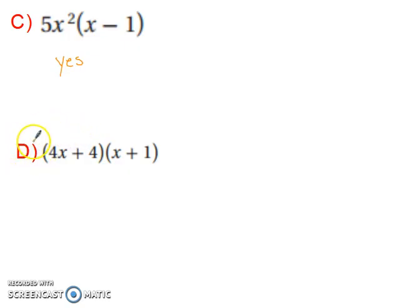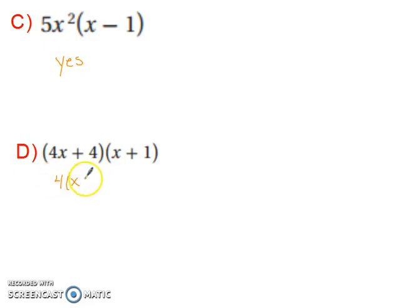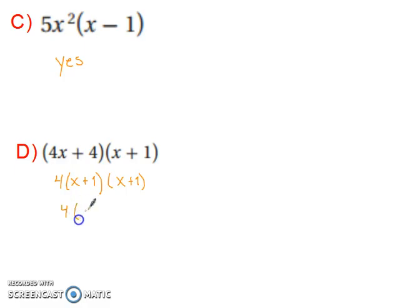Now let's look at example d. You can do something with the 4x plus 4 — you can factor out a greatest common factor. So now we have 4 times the quantity x plus 1, and then we have x plus 1. Both factors are the same, so you can write 4 times the quantity x plus 1 squared.